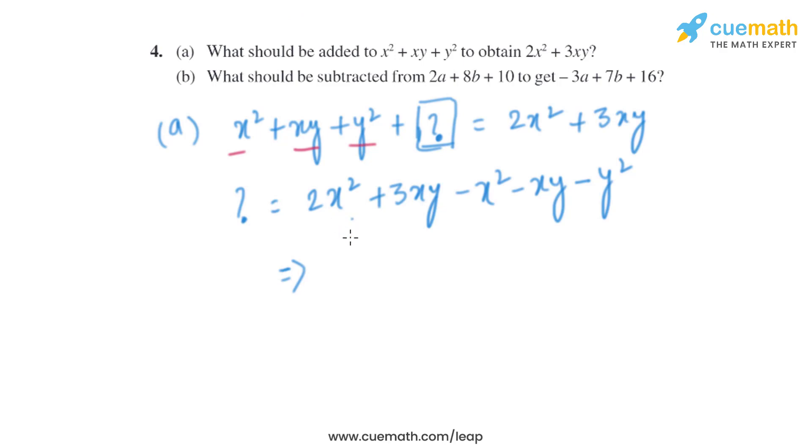So 2x² - x² will give us x², and 3xy - xy will give us +2xy and -y². So when we add x² + 2xy - y² to x² + xy + y², we will get 2x² + 3xy.